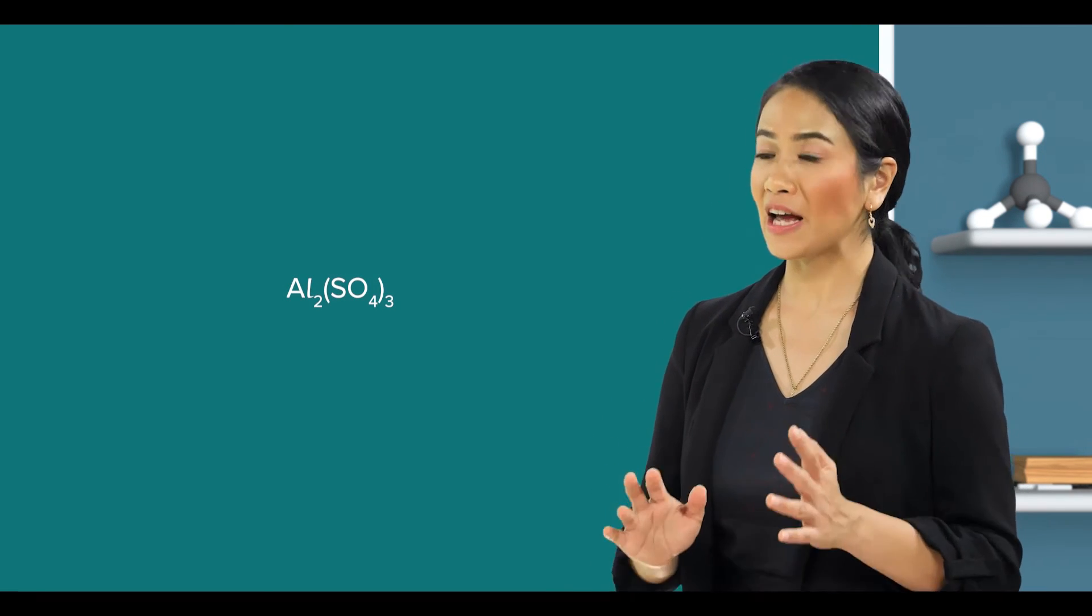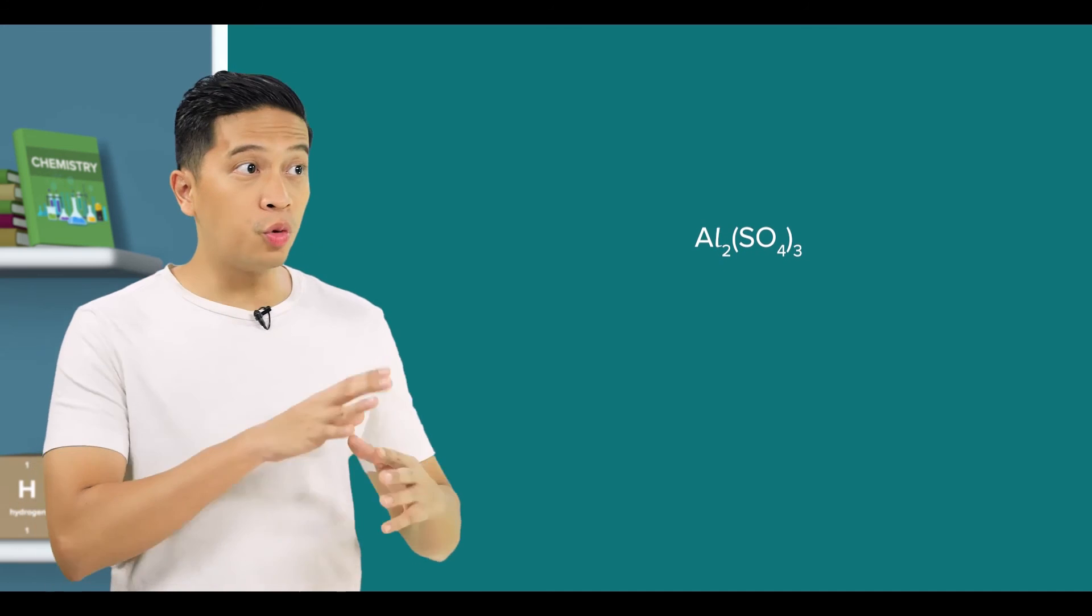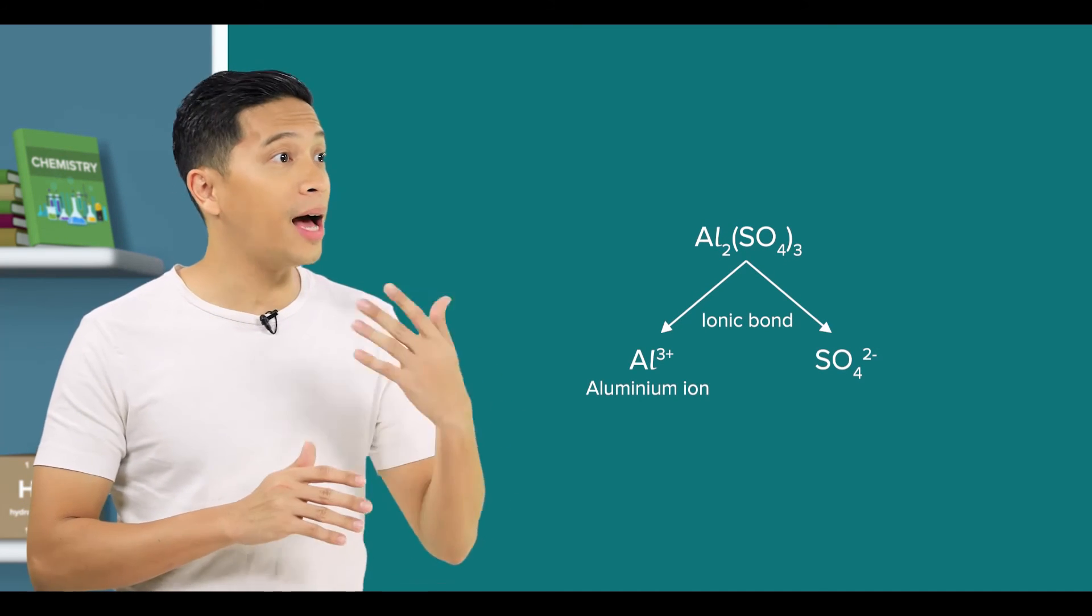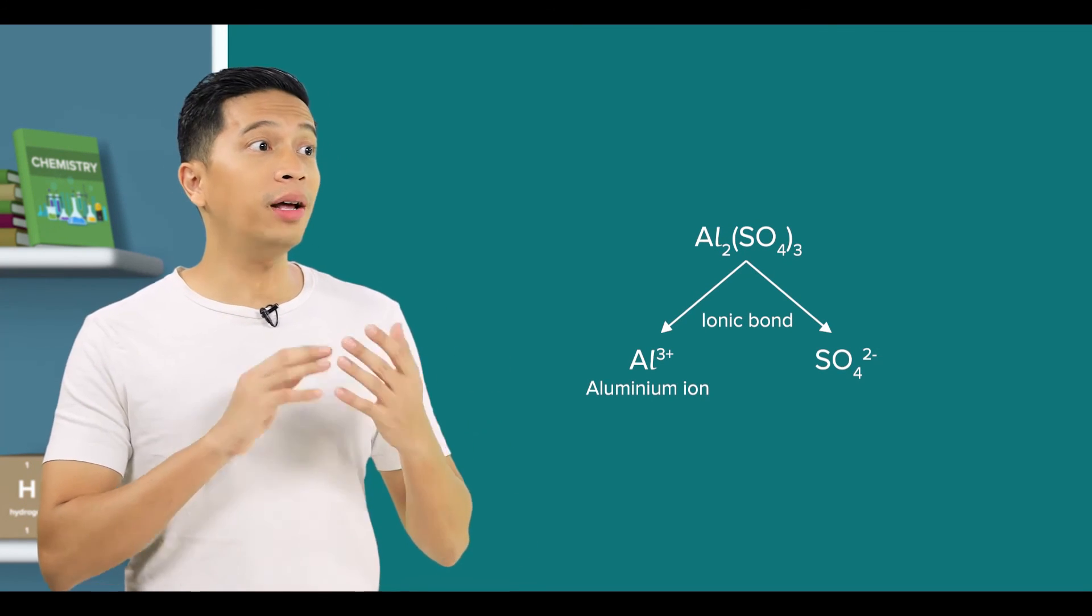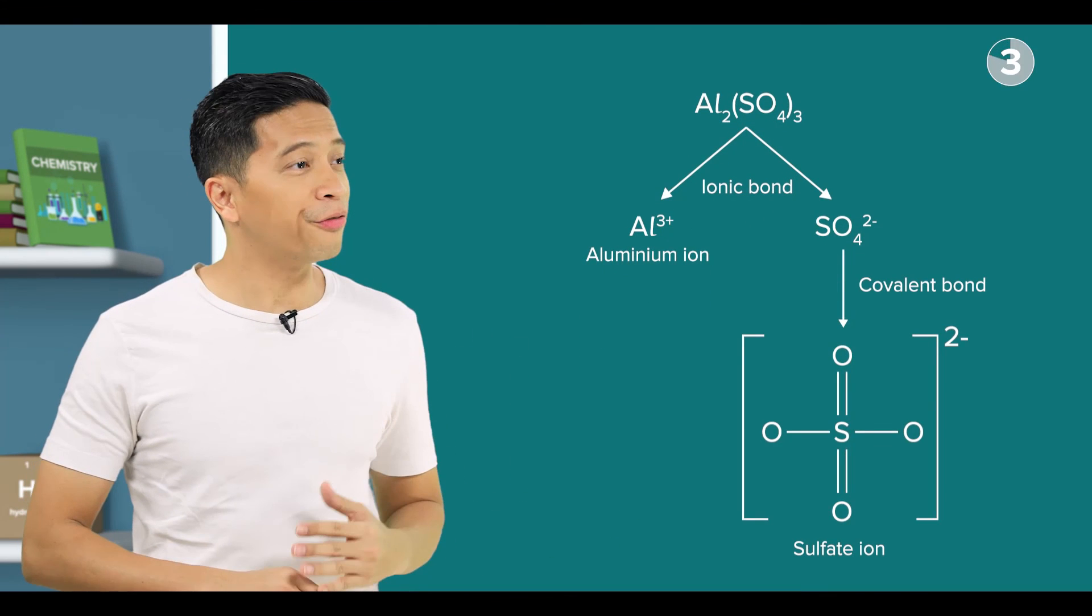Yes, and in the case of aluminium sulfate, there are both ionic and covalent bonds. I know. The ionic bond is between aluminium and sulfate ion, while the covalent bond is within the sulfate ion itself. Correct.